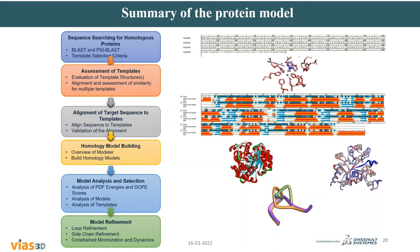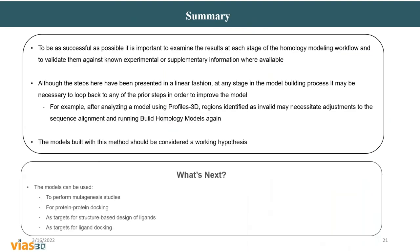For the summary of protein structure determination: it is important to examine results at each stage of homology modeling. Unlike black-box servers, this step-by-step process ensures a proper homology model structure. You can validate your structure against existing experimental structures or supplementary data. The steps are presented linearly, but at any stage in the model-building process it may be necessary to go back to a prior step. Tools like Profiles-3D and Verify-3D, available in BIOVIA Discovery Studio, check that the sequence alignment and homology model are correct.